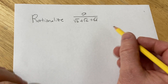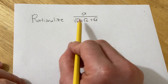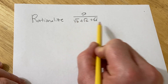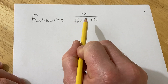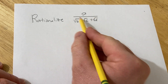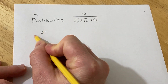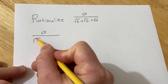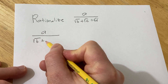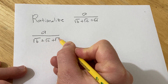In this problem we are going to rationalize. I'm going to show you how to rationalize something whenever you have three square roots in the denominator. So we have a over the square root of b plus the square root of c plus the square root of d.